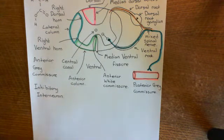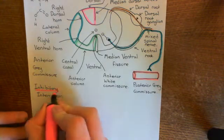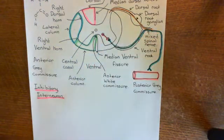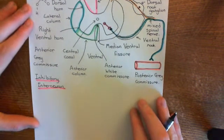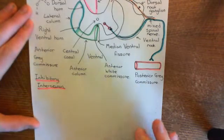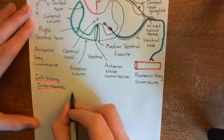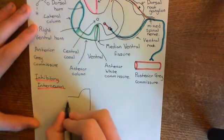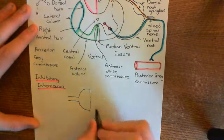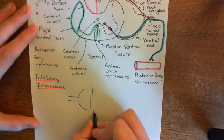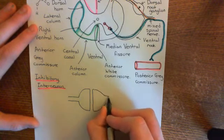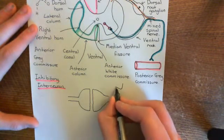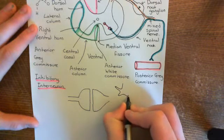Let's have the inhibitory interneuron in pink here. This is the inhibitory interneuron synapsing onto our alpha motor neuron. Let's draw a bigger picture of that synapse and have a look at how it works. Here we have our axon terminal of our inhibitory interneuron, and it will synapse onto a dendritic spine on the alpha motor neuron. It doesn't generally synapse directly onto the dendrite; instead, it often synapses onto dendritic spines.